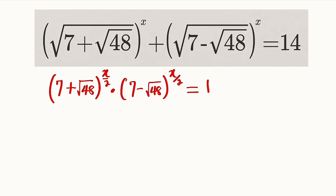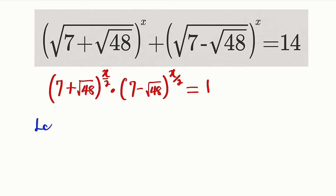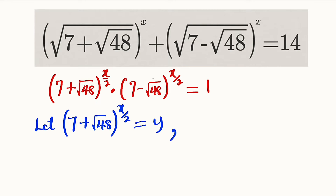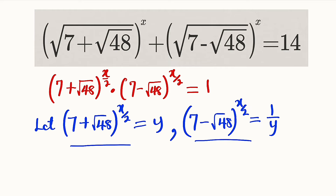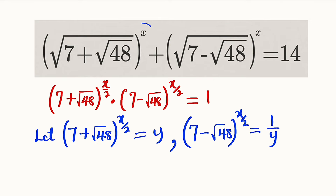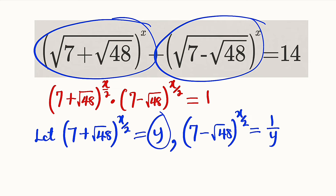Let us begin by substitution. Let 7 plus root of 48 all to the power of x over 2 be equal to y. Since the product of the two terms equals 1, the other term — 7 minus root of 48 all to the power of x over 2 — will be equal to 1 divided by y. We substitute both into the main equation: y represents the first term and 1 over y represents the second.